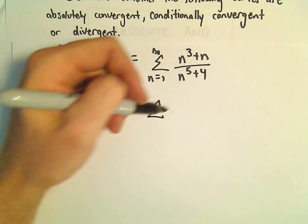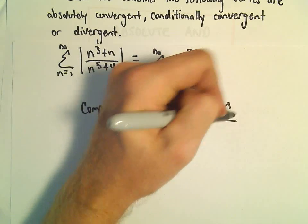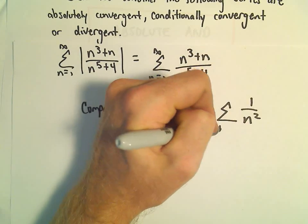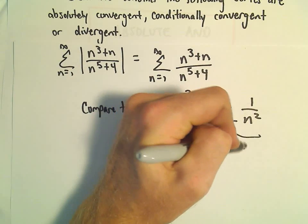Well, again, the trick of keeping dominant terms. So n to the 3rd over n to the 5th, that'll give us 1 over n squared. And 1 over n squared, that's just a convergent p-series.